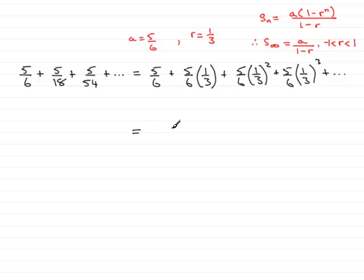So all we need to say is that a is 5/6, so we've got 5/6 divided by 1 - r, so 1 minus the common ratio of 1/3. And if you do this sum, what you'll find you get is 5/4, 5 over 4, 1.25. I'm just going to leave it as 5/4 though, since they seem to be working in fractions here.